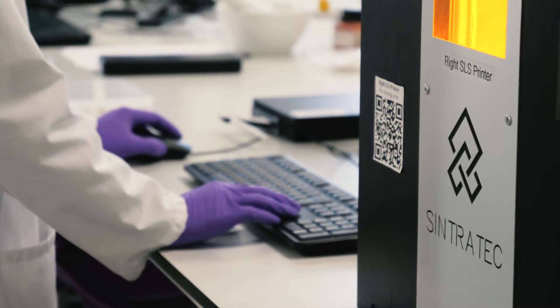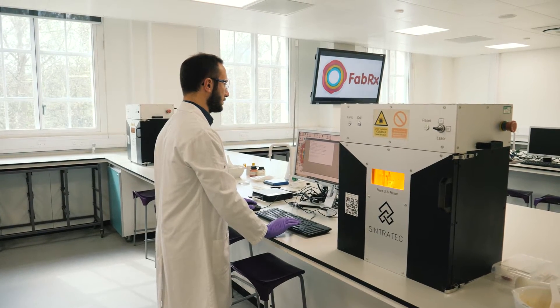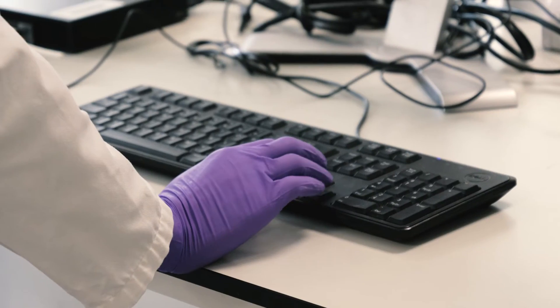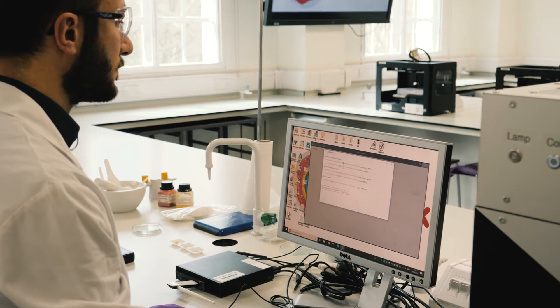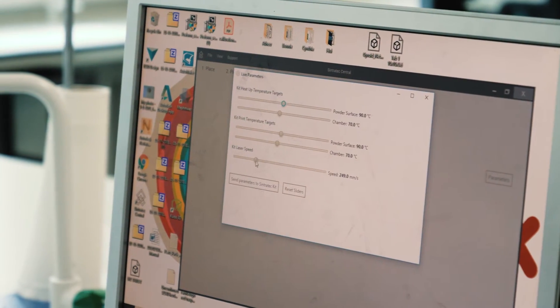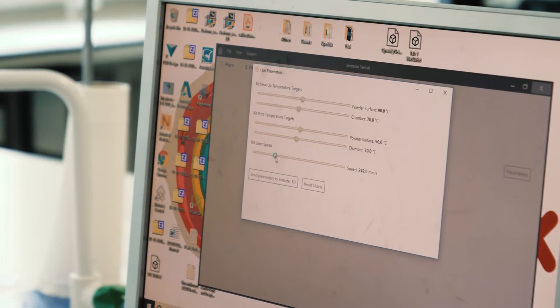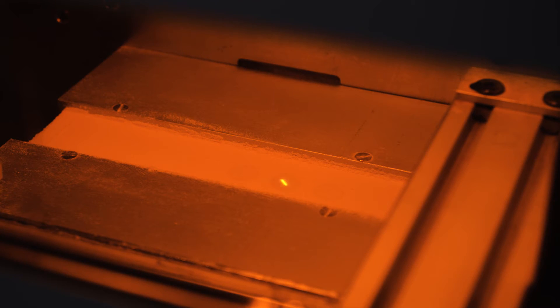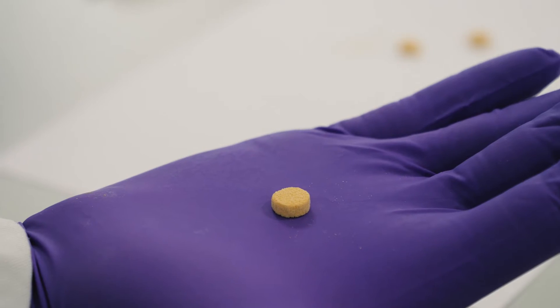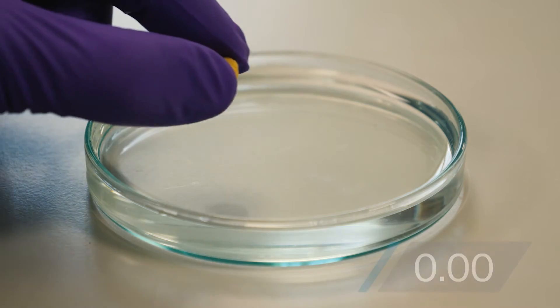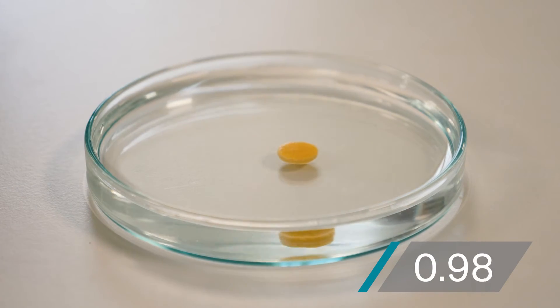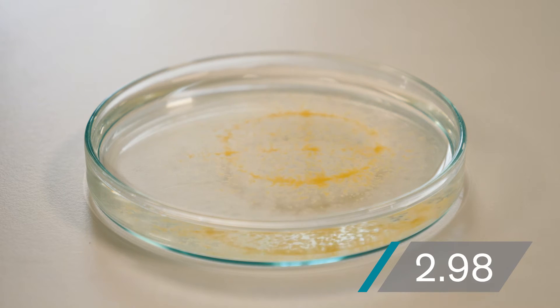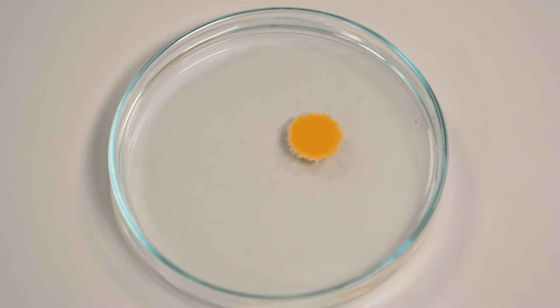The big advantage of the Sintratec kit is we can customize the printing parameters, we can choose the ideal temperature and the ideal laser speed. We can start from one millimeter per second up to 1000 millimeter per second and in that big range we can actually make very different products with different strands which dissolve at different times just by changing the laser speed.